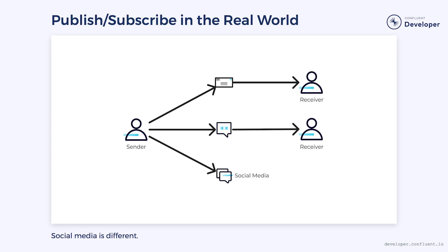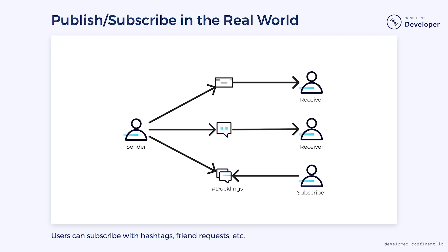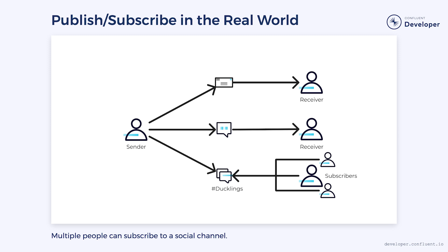Social media follows something closer to a publish-subscribe model of communication. When we publish something to a social media page or channel, we don't have much control over who will see it. Anyone who subscribes to that social channel will have access to what we post. These subscriptions take the form of friend requests, following hashtags, and a variety of other mechanisms. Most social channels will have many people subscribe to them, and when we publish messages to these channels we give up control over the conversation. We might be having a conversation with a thousand people, or we might be shouting into an empty room.